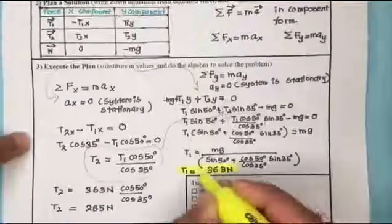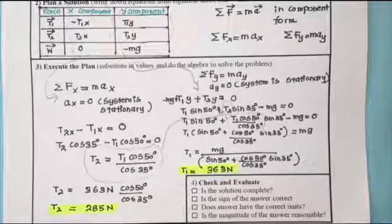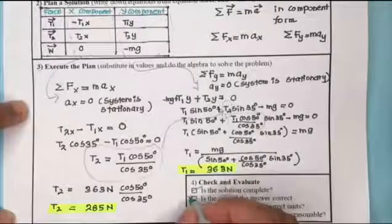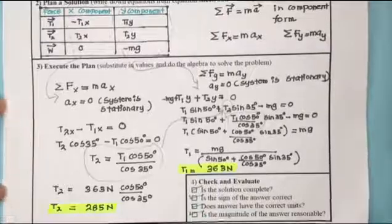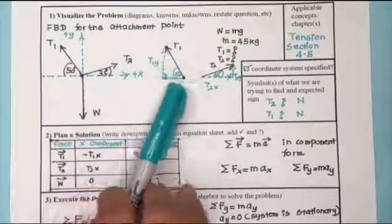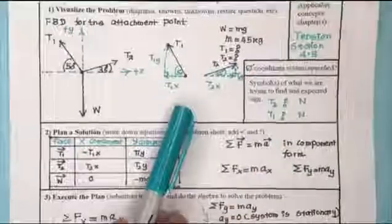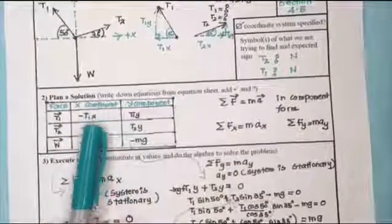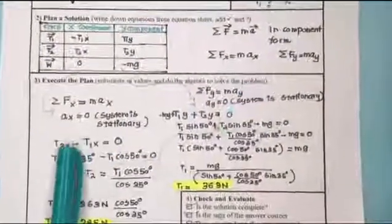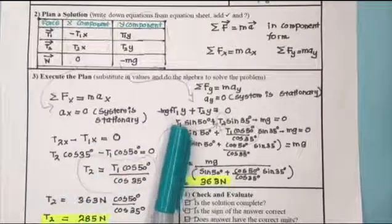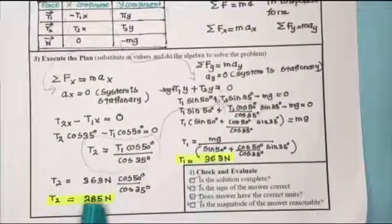Solving gives T1 equals 363 newtons. Substituting T1 back into the equation for T2 gives T2 equals 285 newtons. The solution is complete: the sign of the answer is correct, the units are correct (newtons), and the magnitude is reasonable. We drew a free body diagram, completed the vector triangle, identified x and y components in the chart, and applied Newton's second law in both component directions — reducing from four unknowns down to two.